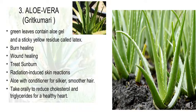Next one is aloe vera — another name for aloe vera is Grith Kumari. The green leaves contain aloe gel and a sticky yellow residue called latex. The benefits of aloe vera include: it helps in burn healing, wound healing, treating sunburn, and radiation-induced skin reactions. Aloe vera can be used as a conditioner for silkier, smoother hair, and taken orally to reduce cholesterol or triglycerides for a healthy heart.